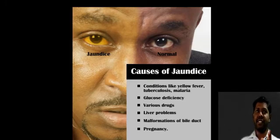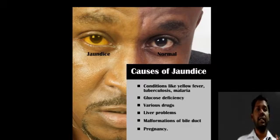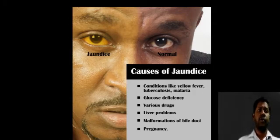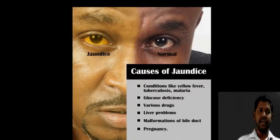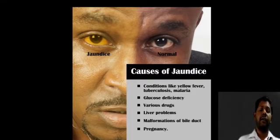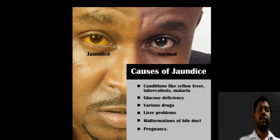Coming to icterus or jaundice — while cyanosis gives a bluish discoloration, jaundice is characterized by yellowish discoloration of the skin and mucous membrane due to increased bilirubin content. Normal bilirubin is approximately 1 mg/dL, but in jaundice it is more than 2 to 3 mg/dL. It can be seen in nail beds, the face, and especially in the sclera of the eyeball. The three types are hepatocellular, obstructive, and hemolytic jaundice.